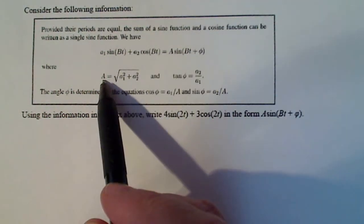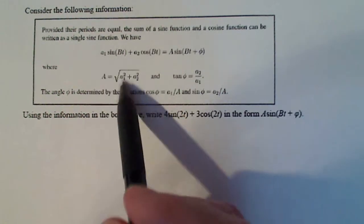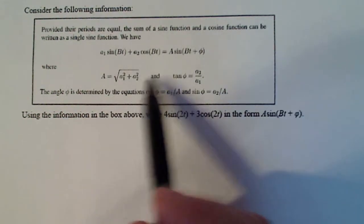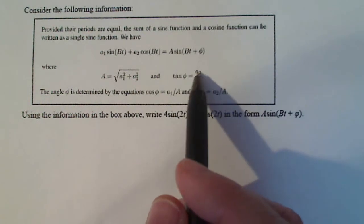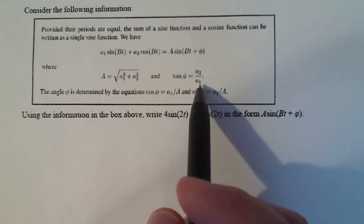And it tells me that capital A is defined as the square root of a1 squared plus a2 squared. And phi is just equal to, or tangent of phi is equal to a2 over a1.